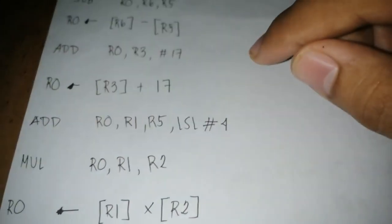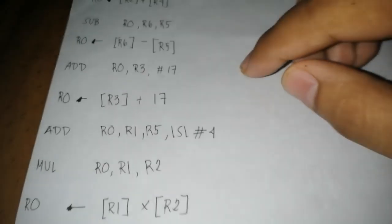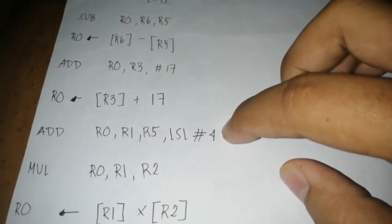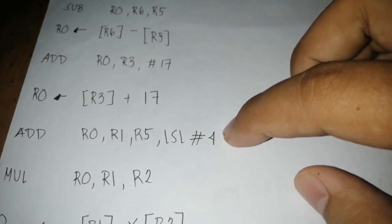So this will be the value in R0, then here add R0, R1, R5, LSL number 4.